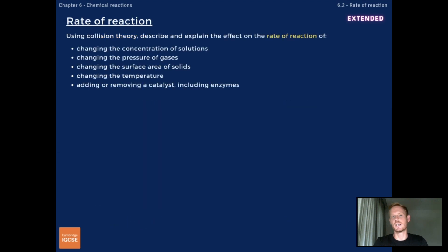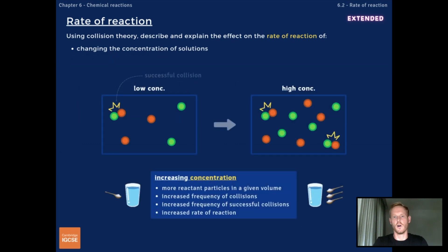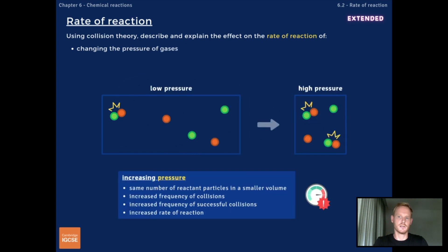Collision theory can help to explain why the factors we looked at earlier affect the rate of a chemical reaction. Increasing the concentration of a solution means that there are more reactant particles in a given volume, which increases the frequency of collisions and successful collisions between particles, leading to an increased rate of reaction. Increasing the pressure of a gas forces particles closer together, so that the same number of particles occupy a smaller volume, increasing the frequency of collisions and successful collisions, leading to an increased rate of reaction.